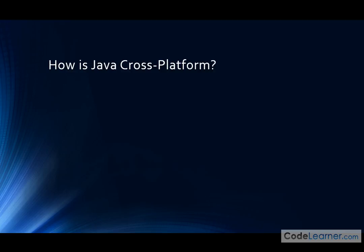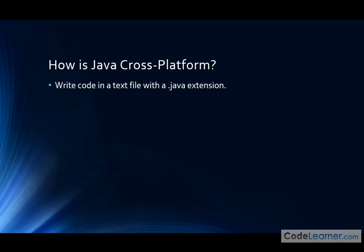When we talk about Java being cross-platform, we need to take a few minutes to talk about what that really means. When you write code, when you actually write your program, you write it in a text file that you can read, and it has a .java extension. I really want you to remember this because as we go through the course, we'll be doing this over and over again. When you write your code, it will be a regular text file with a .java extension — these will be the instructions you want to execute.